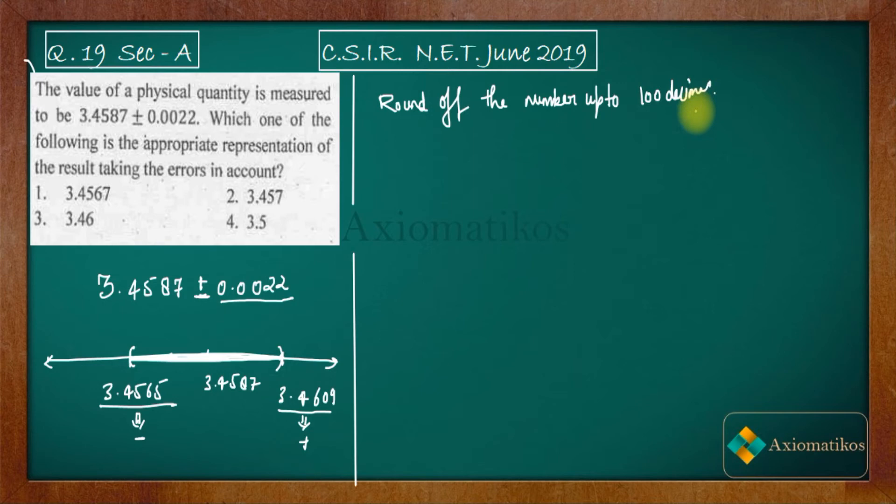So if you will round off up to hundredth place, what will happen? The number that you have is 3.4609. So this one is the hundredth. Now the number which is next to it is less than 5. Because the number which is next to it is less than 5, its approximation or rounding off up to hundredth decimal place will be 3.46.